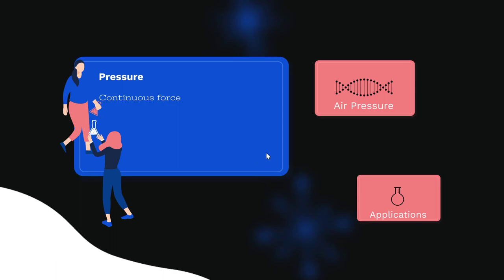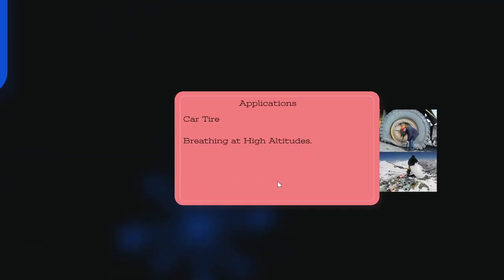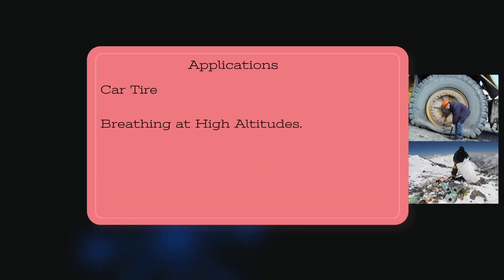Now let's talk about applications of pressure. For car tires or bicycle tires, we put a large amount of gas into the tire, and the pressure is caused by all those gas molecules bouncing off the inside of that tire. When they bounce off the inside, the tire is able to resist both the outside air pressure and the pressure of the car on top of it — withstanding the weight of the car and the air pressure on the outside.